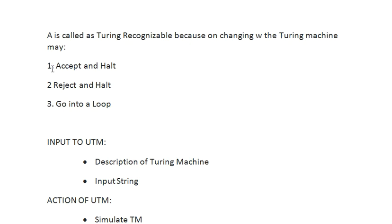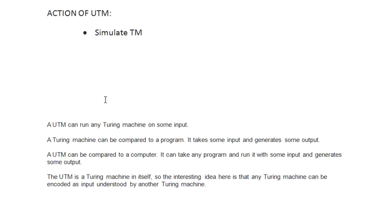For any Turing machine, there are three important outcomes when processing input W: it may accept and halt, reject and halt, or go into a loop and never halt. To understand the difference between a Turing machine and a Universal Turing Machine: a specific program like one written in C or Java can be compared to a Turing machine, while an entire computer — accepting C, Java, Python, and any language — can be compared to the Universal Turing Machine.